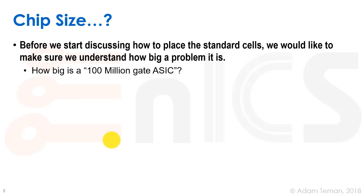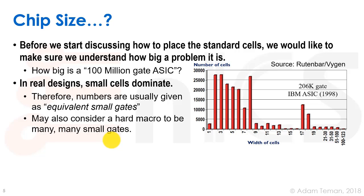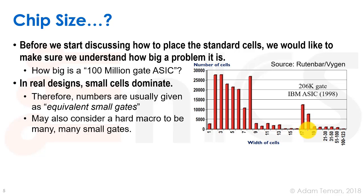When people say chip size, what are they exactly talking about? So when somebody says I'm building a 100 million gate ASIC, how big is it actually? When we look at a real design, we can see that small cells dominate. Rob Rutten-Barr made this plot several years ago — he took a 206,000 gate IBM ASIC and looked at a histogram of cell sizes. You can see that there are very few tiny cells, but a ton of small cells. In fact, most of the cells are small, and there are very few big cells. Probably the largest cells are some macros or IPs, but most of the cells really are small.